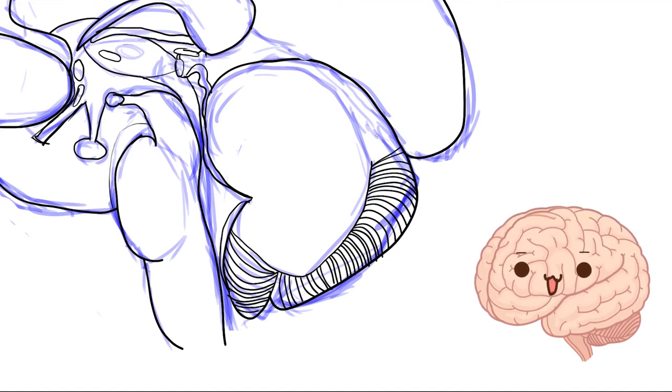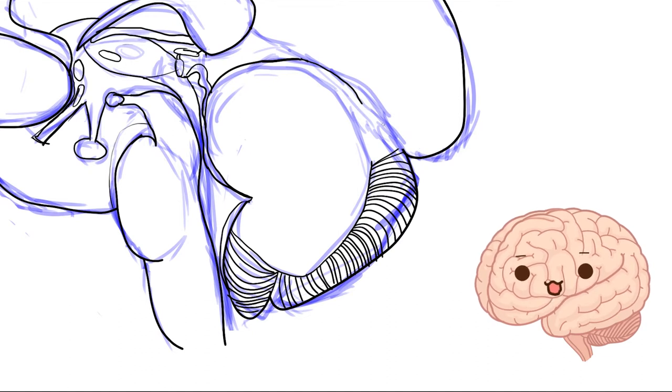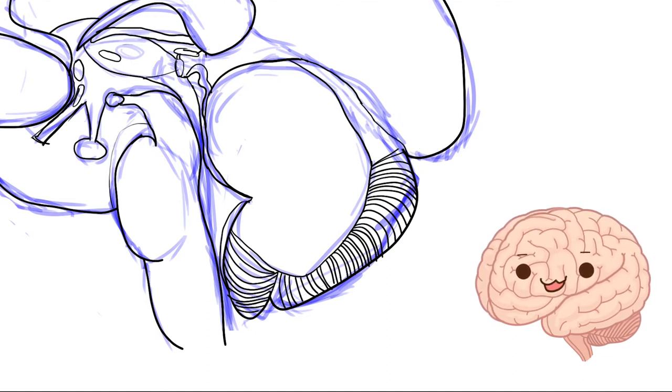There are three layers in my cortex: the molecular or synaptic, the Purkinje layer or discharge layer, and the granular or receptive layer.